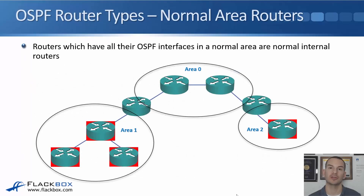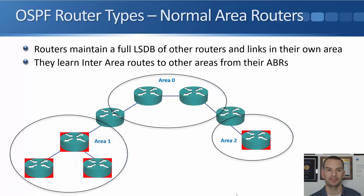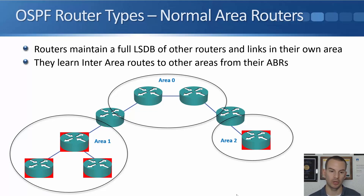The next type of router is a normal area router, which is a router where all of its interfaces are in just one normal area. On the left, the highlighted routers are area one routers with all interfaces in area one, and there's an area two router on the right. These routers maintain the full link state database for the areas they're a member of. All area one routers will have the full LSDB for area one, with summary routes for area zero and area two learned from the ABR. The area two router will have the full LSDB for area two and summary routes for area one and area zero.